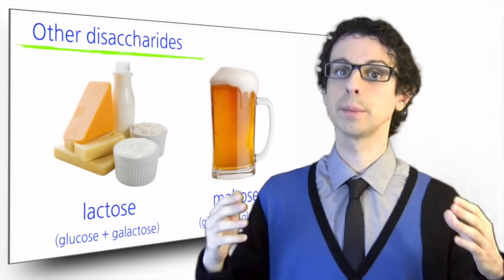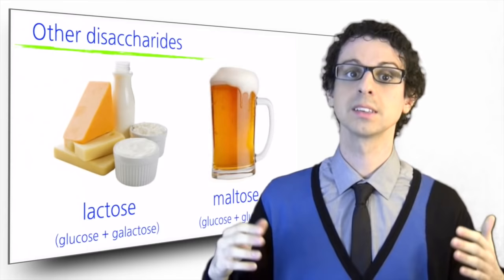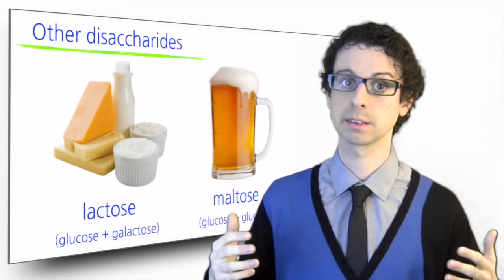When a molecule of glucose combines with another molecule of glucose, we get maltose, some of which is found in beer and liquors as a result of fermentations operated by yeasts on starch.